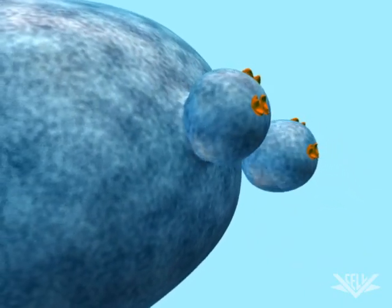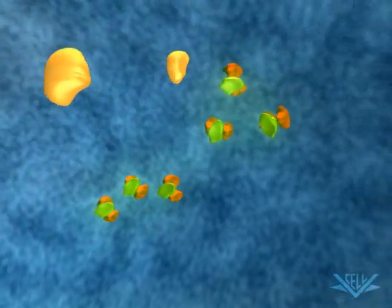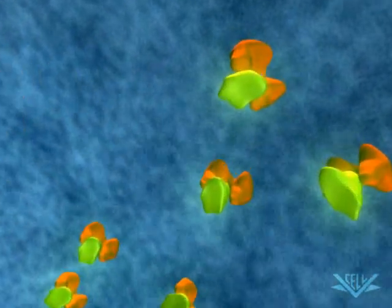The vesicle docks and fuses with the endosome. At this point, the hydrolase is released.